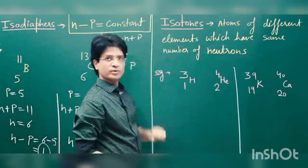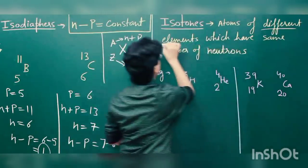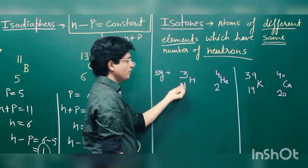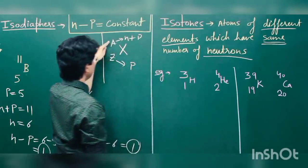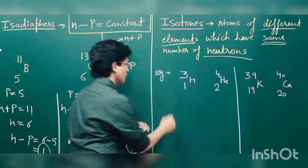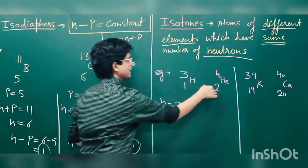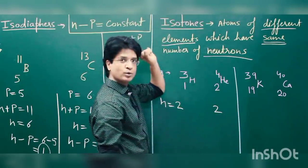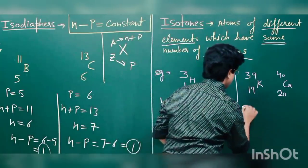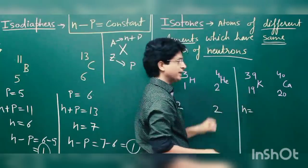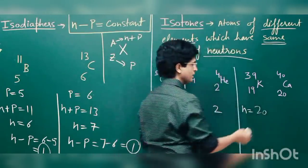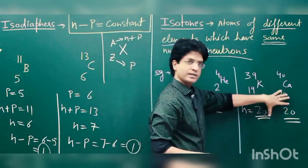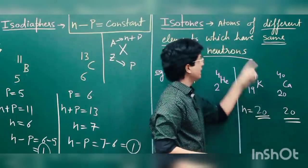Now isotones. Isotones are atoms of different elements which have the same number of neutrons. The number of neutrons is given by A minus Z. For example, tritium (A=3, Z=1) gives N equals 2, and helium-4 (A=4, Z=2) also gives N equals 2. Similarly, potassium-39 (39 minus 19 = 20 neutrons) and calcium-40 (40 minus 20 = 20 neutrons) — both have 20 neutrons, so potassium and calcium in this case are isotones.